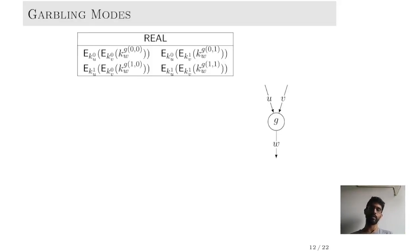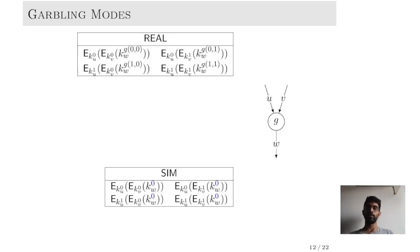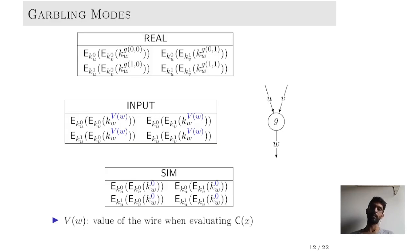Key to all these security reductions is the notion of garbling modes. The honest garbling table of gate G encodes the gate table of gate G — we call this the real mode. On the other hand, in the simulated mode, instead of garbling gate G, we simply garble the constant zero gate, so the payload in the garbling tables is always kW0, the key corresponding to the output wire encoding the zero bit. In between these two modes is the input dependent mode, where the payload is a constant but is determined by the value of the wire when we evaluate the circuit on input X. In order to simulate this mode, knowledge of the value of wire W is necessary, unlike in the case of real or simulated modes.